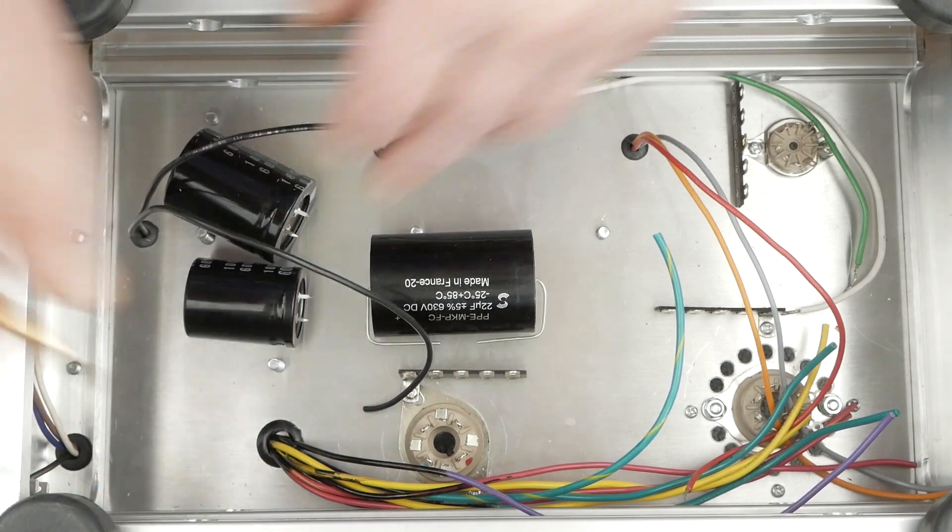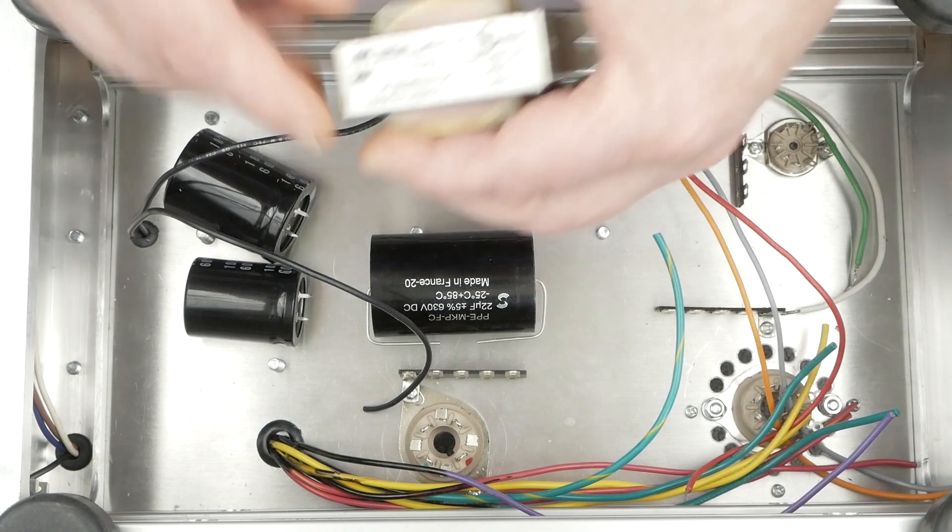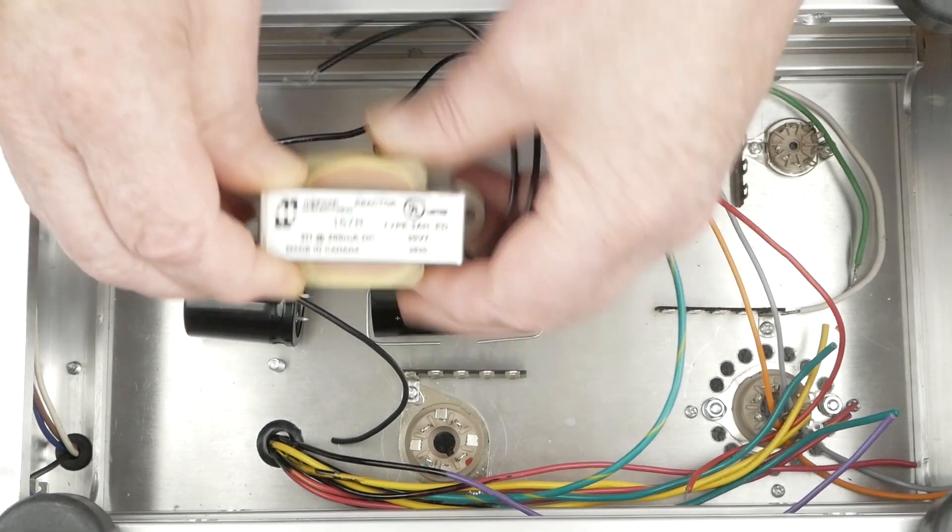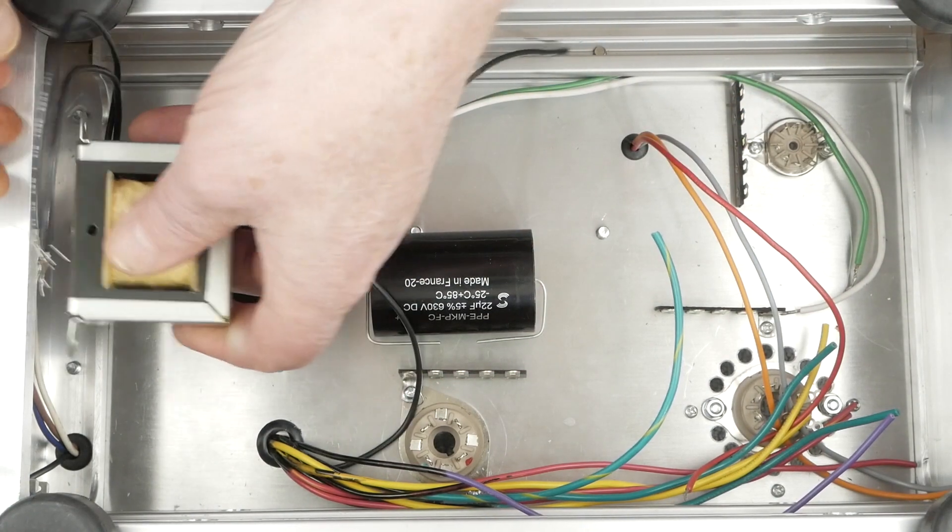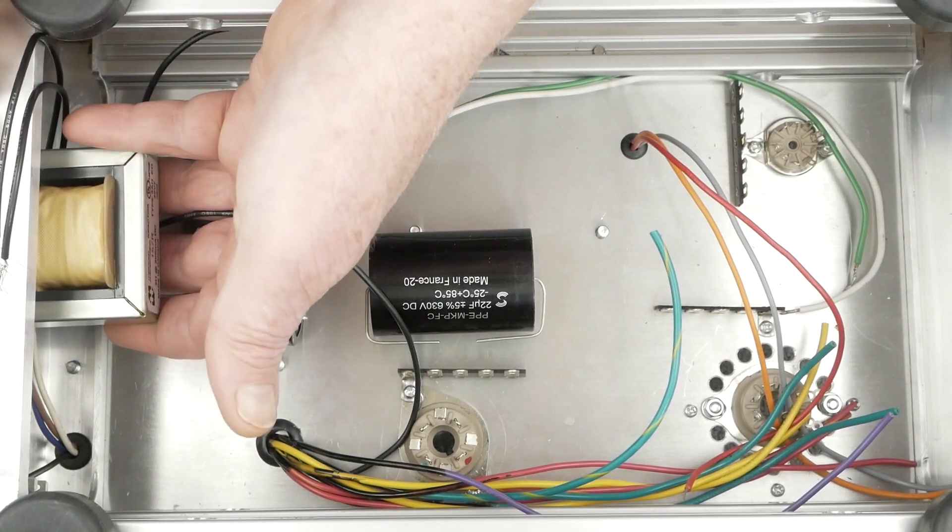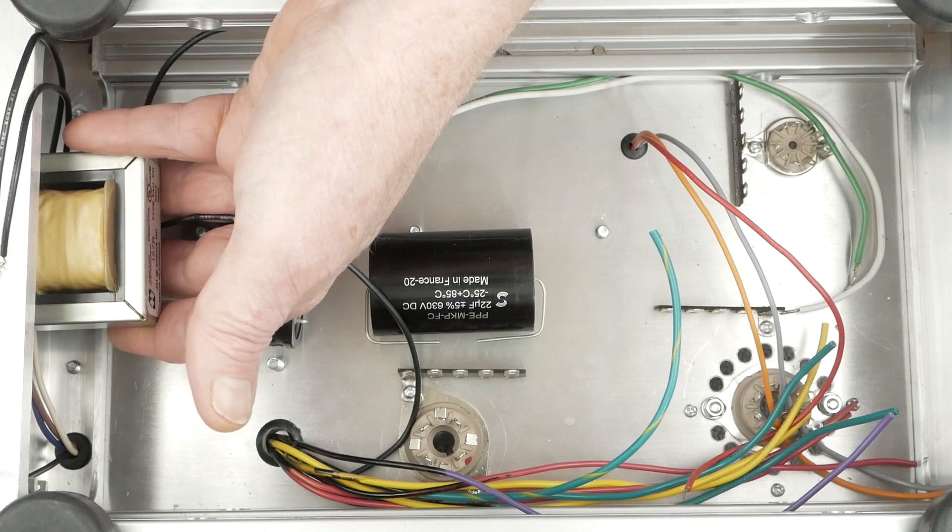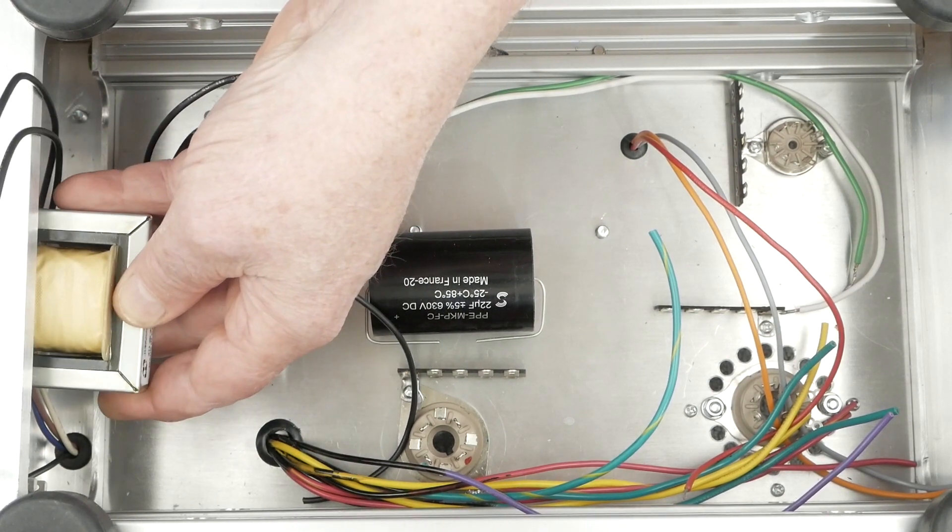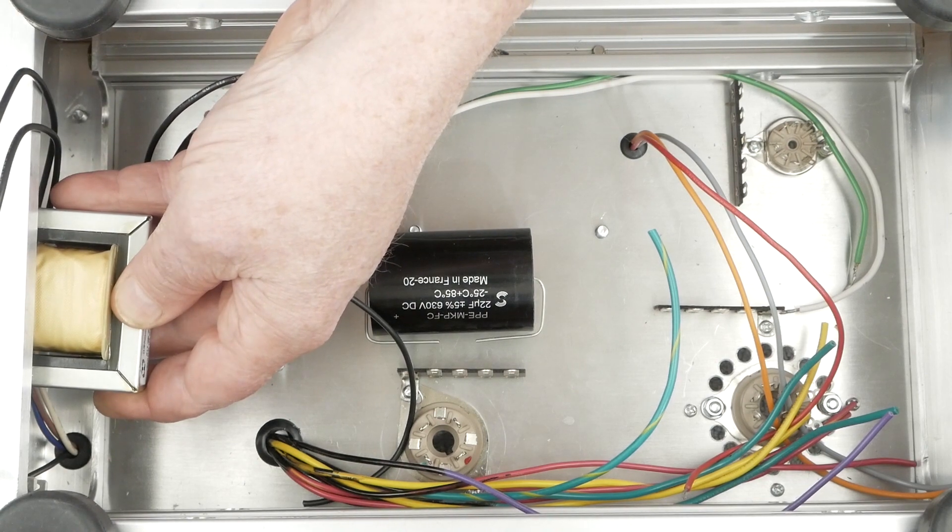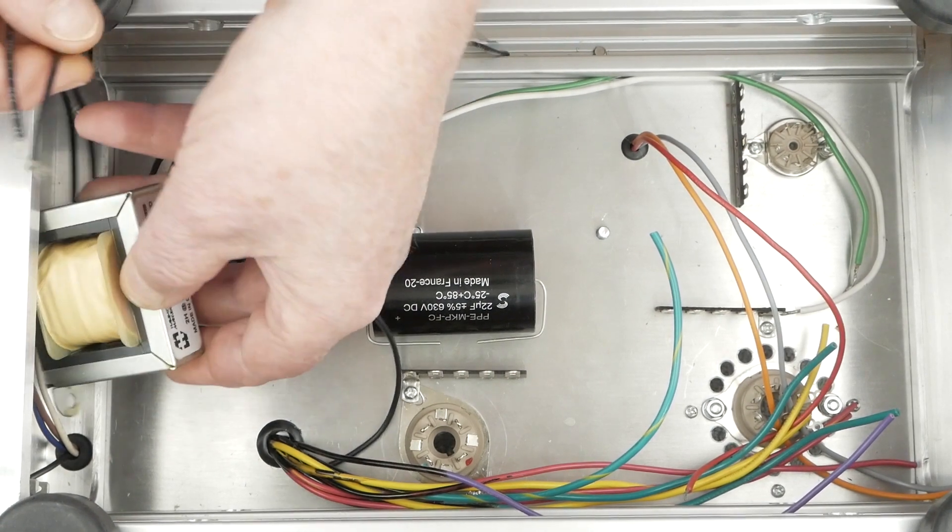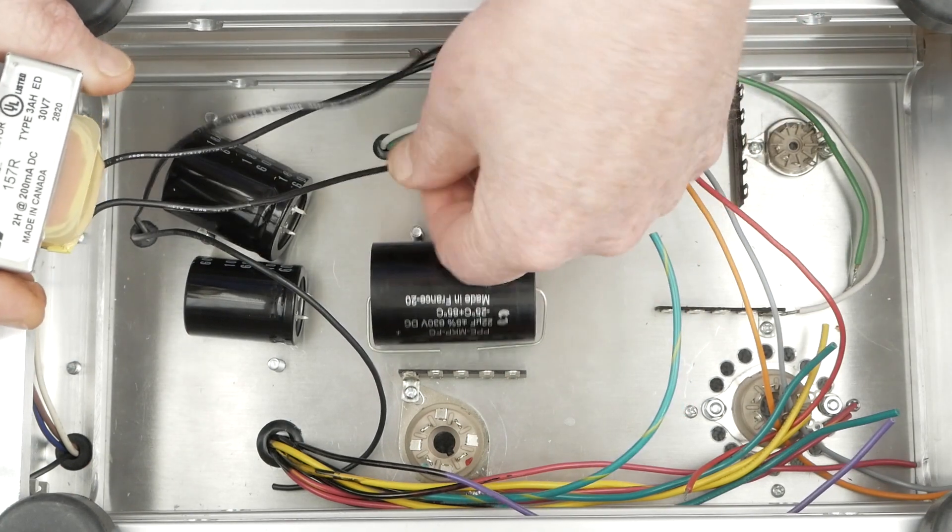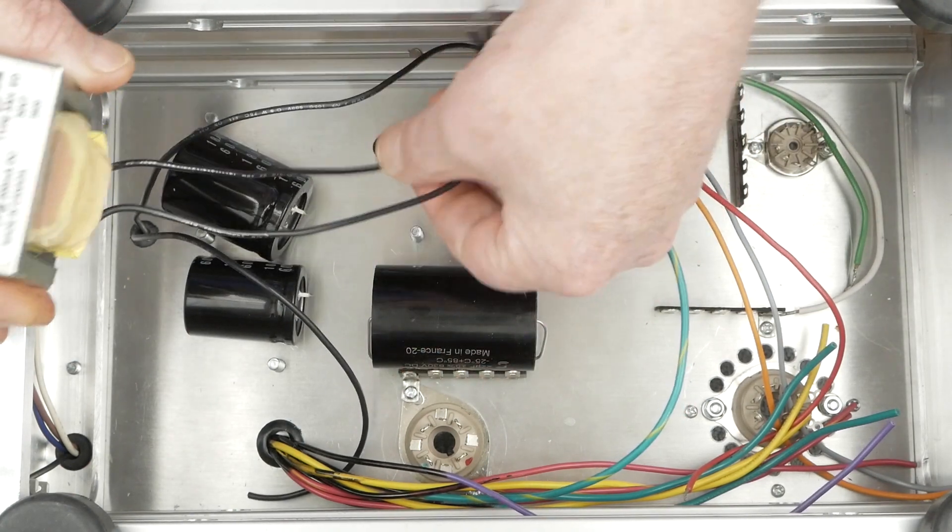Then the next thing we have to mount is this 157R choke. It's going to sit up here on the back side of the amp screwed to this rear panel. It's probably going to be mounted over kind of close to this power connector. So then these leads can come down between this capacitor and that capacitor.